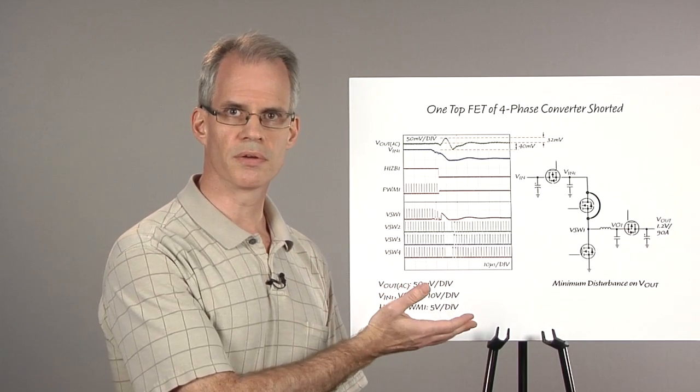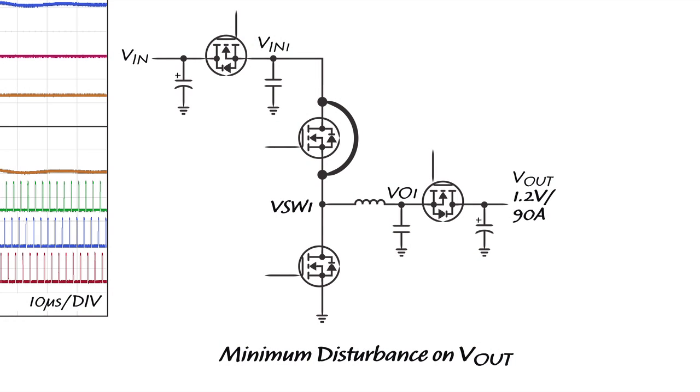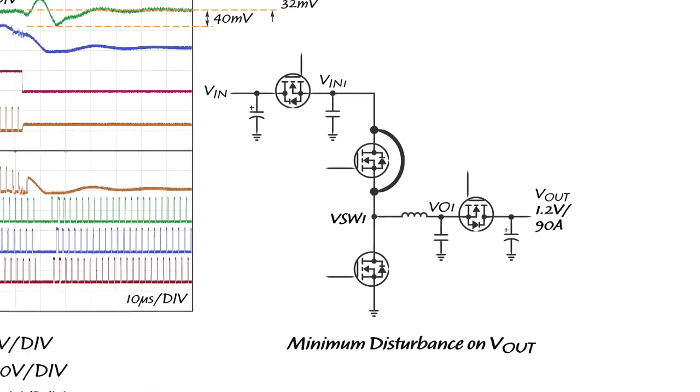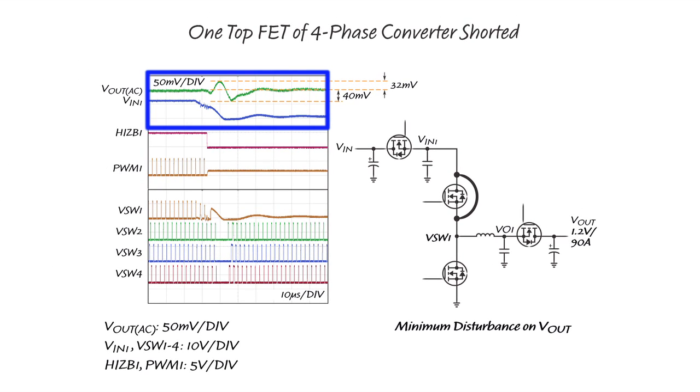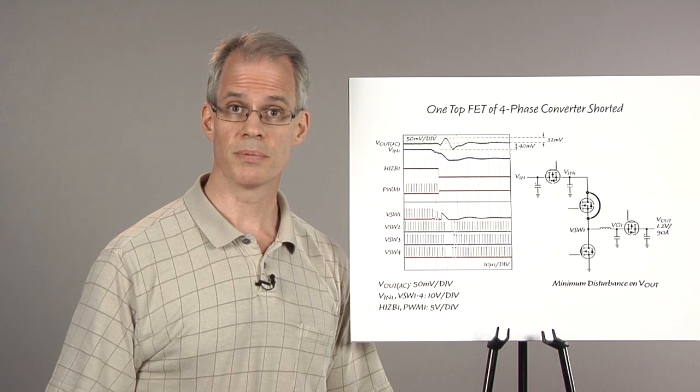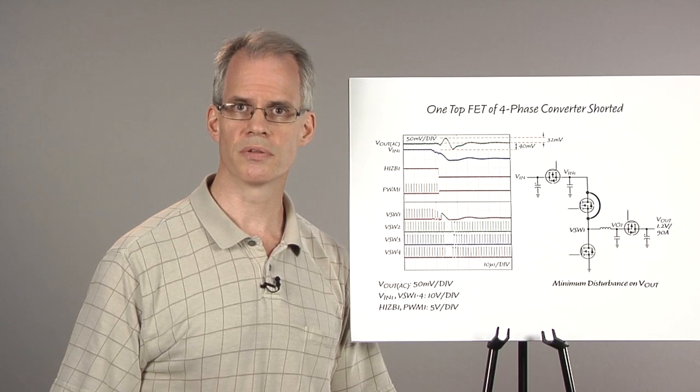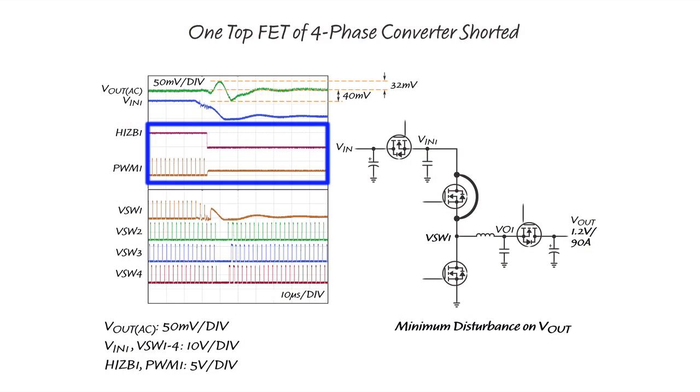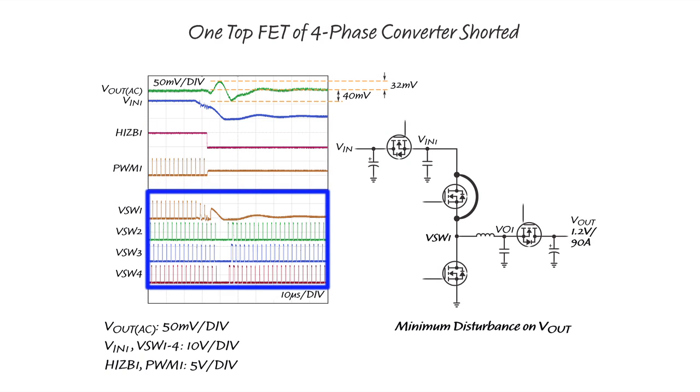Here is an example of a top FET failure. The failure was created by shorting the top FET of phase 1 with a resistance of about 2 milliohms. During the fault, the local input voltage for the phase collapses, but the main output has a small overshoot of 32 millivolts and undershoot of 40 millivolts. The LTC4226-1 hot-swap circuit plays a large role in minimizing this disturbance by quickly and safely limiting the current flowing into the fault. After a few microseconds, it turns off the hot-swap MOSFET and pulls the HIZB pin of the LTC3774 low, which floats its PWM output. This, in turn, disables the driver MOSFET. Due to the fast response of the hot-swap circuit, phases 2 through 4 continue to switch even though phase 1 has a fault.